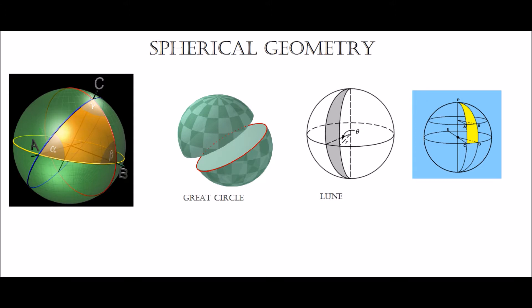So you might ask, what is a great circle? Well, to put it simply, a great circle is the largest possible circle which you can map onto a sphere, shown here in red. In order to create a great circle, you can essentially pass a plane through a sphere, and as soon as that plane intersects with the very center of that sphere, the resulting intersection with the sphere will create a great circle.